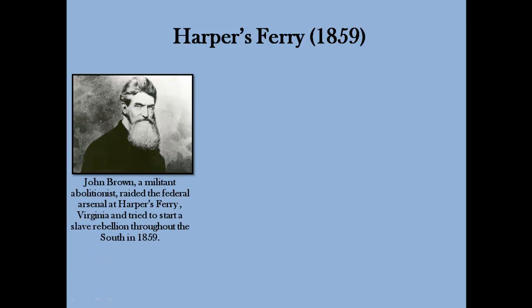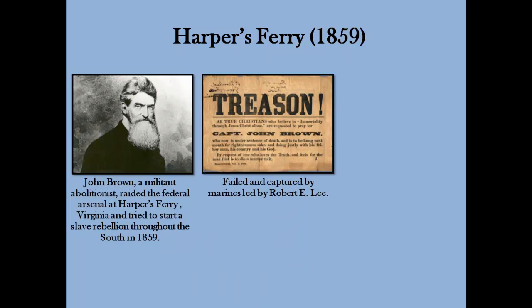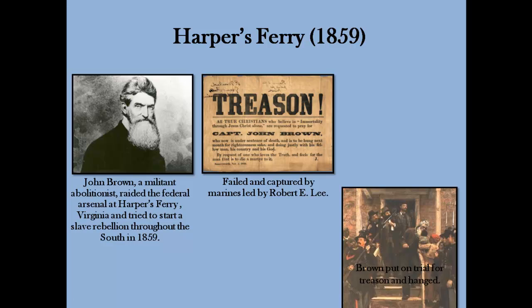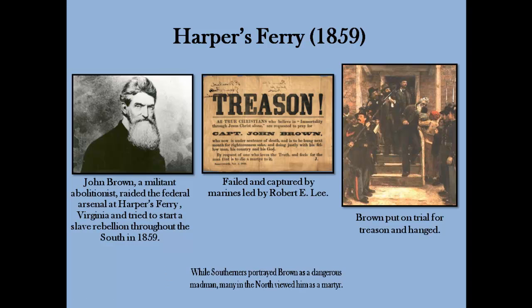For those wondering what John Brown was up to since his adventures in Kansas — John Brown planned to start an armed slave rebellion in Virginia. This plan involved capturing the federal arsenal at Harper's Ferry and distributing weapons to the hundreds of followers Brown thought would join his effort. Brown's plan failed when he was captured by Marines led by Robert E. Lee. Brown was tried and convicted of treason before being hanged. Brown's actions terrified Southerners as they always feared a slave revolt, and while Southerners viewed John Brown as a madman, he was a martyr for Northern abolitionists.